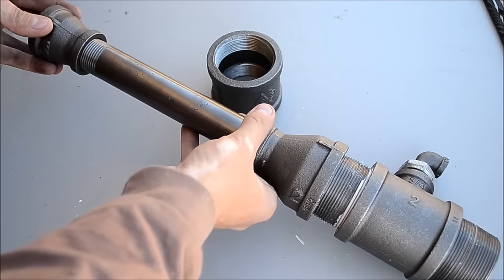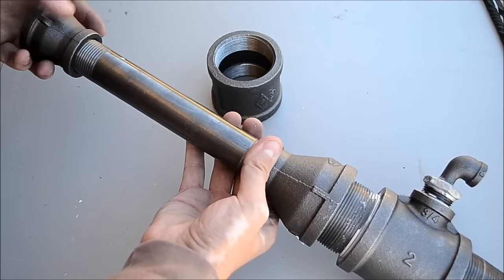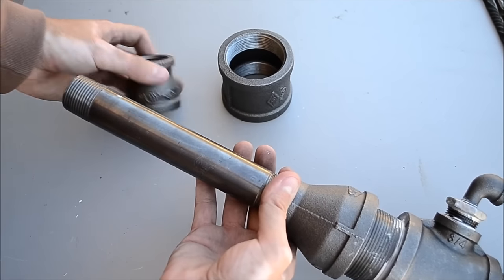To the end of the black 1 inch pipe, we're going to add the 1 inch to 1 and a quarter inch reducer.